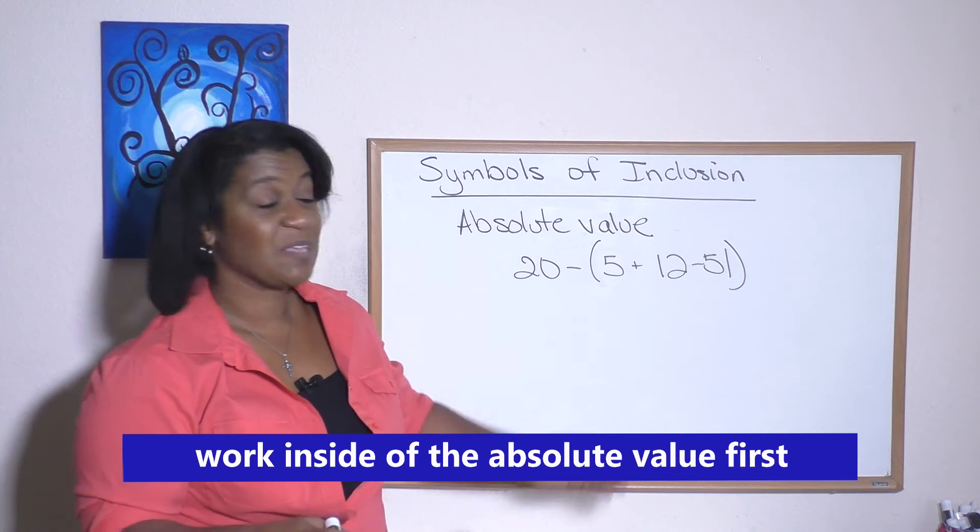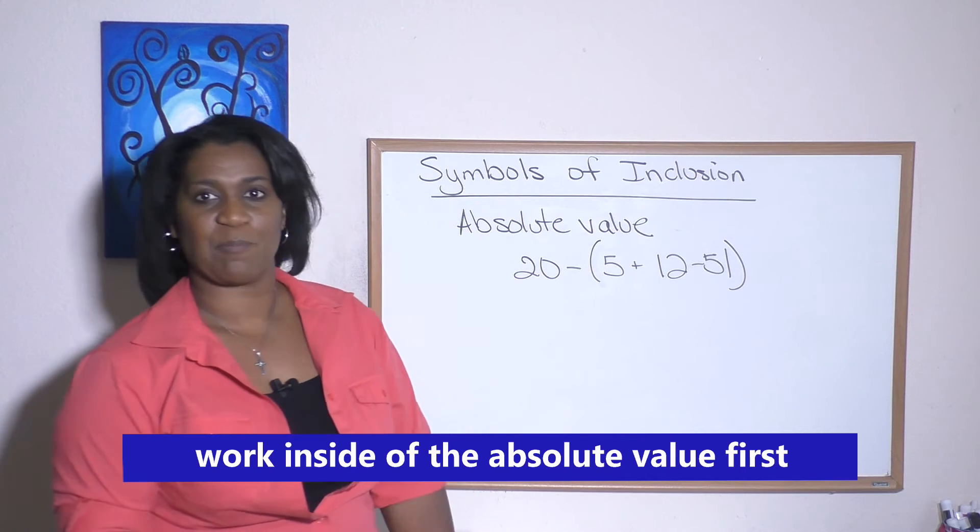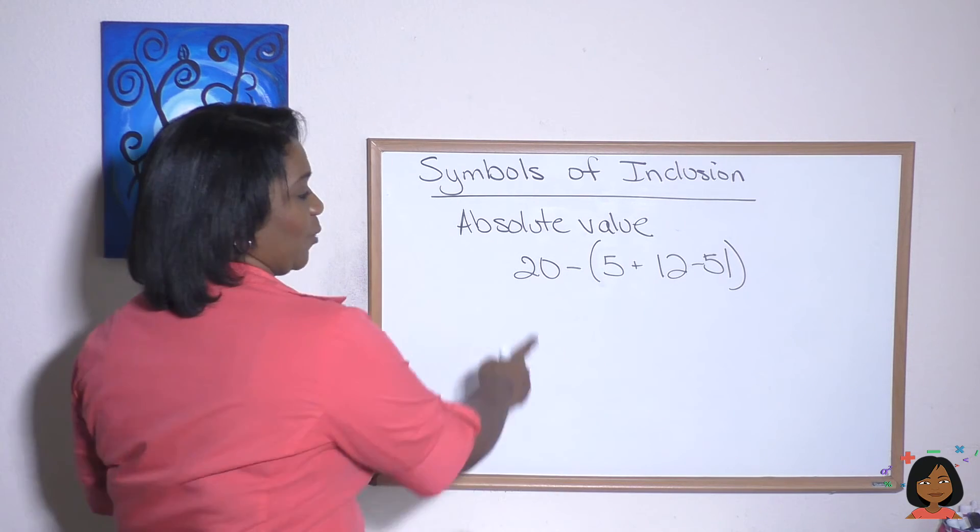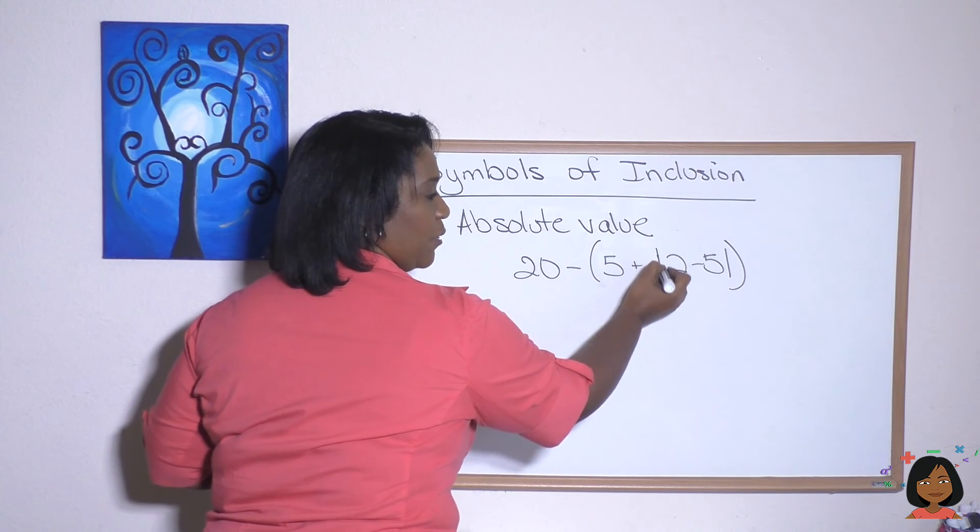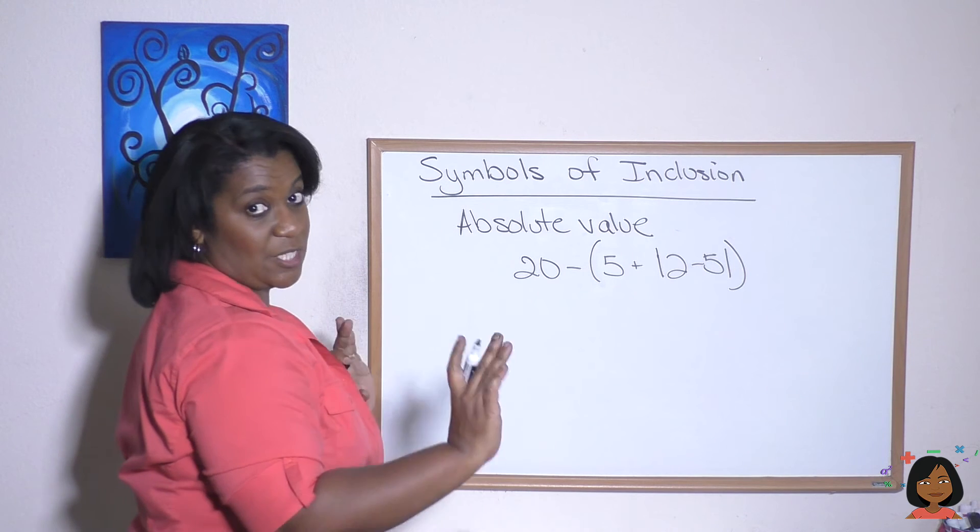Here you see my example: I've got one inside of my parentheses, so let's do it. We've got 20 minus parentheses 5 plus absolute value of 2 minus 5. Let's do the 2 minus 5 absolute value first.